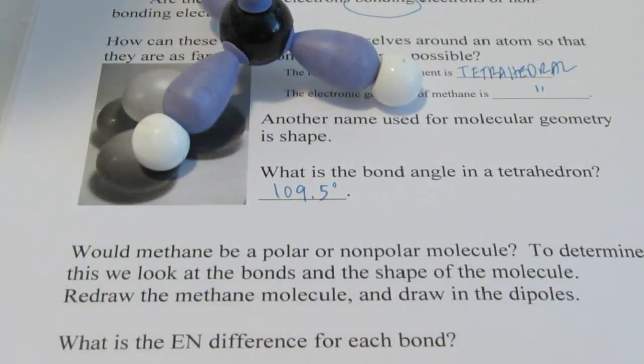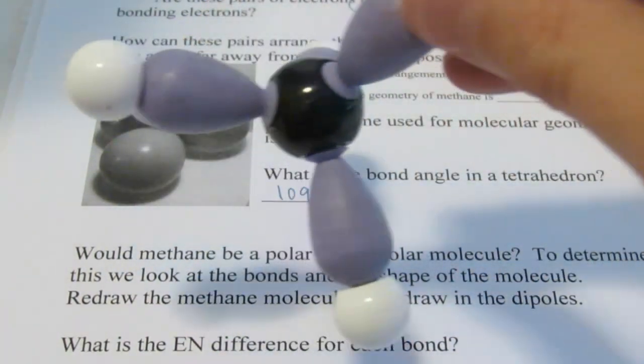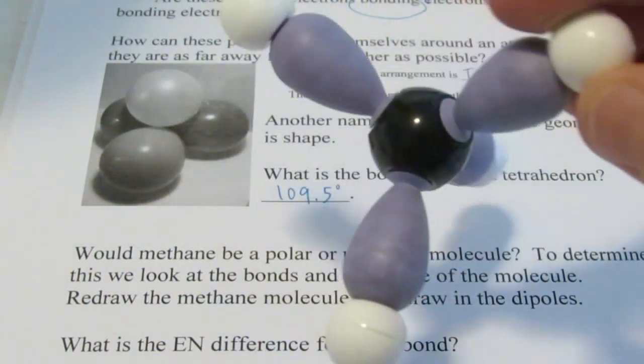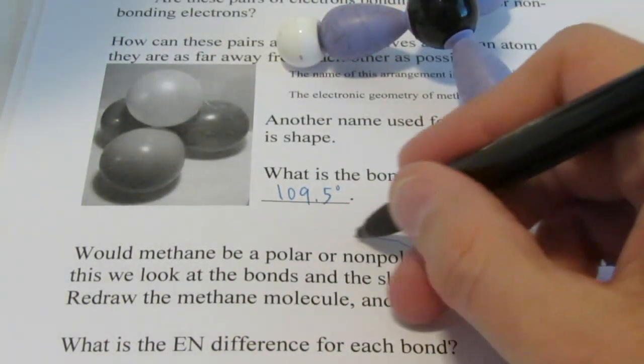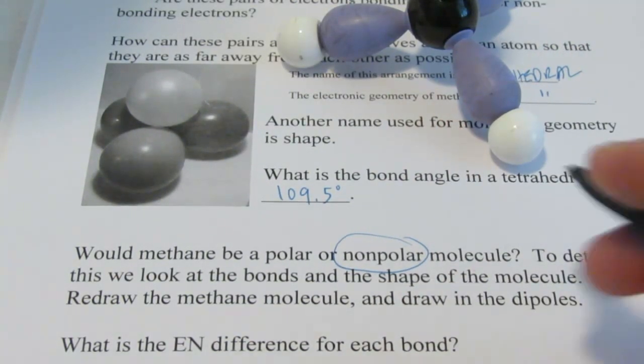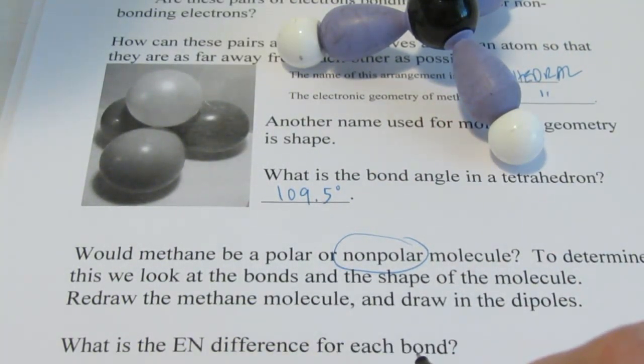Now, think about our little spaceship analogy. Would that be polar or nonpolar? Let's see, we have vector quantities, four of them. They're all like spaceships pulling on that central asteroid there. It's not going to move, is it? So, that's going to be nonpolar. So, once again, to determine this, we look at the bonds and the shape of the molecule.